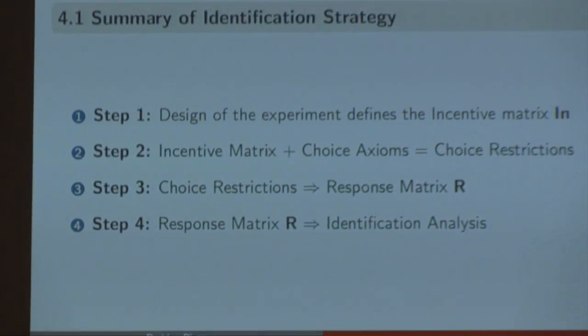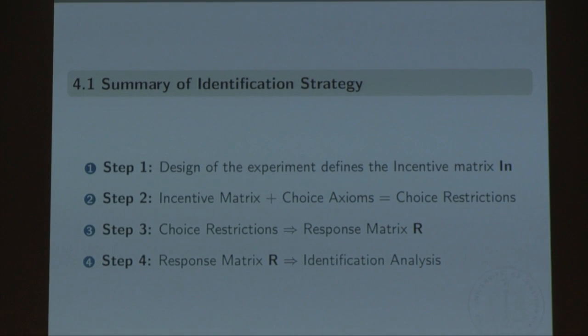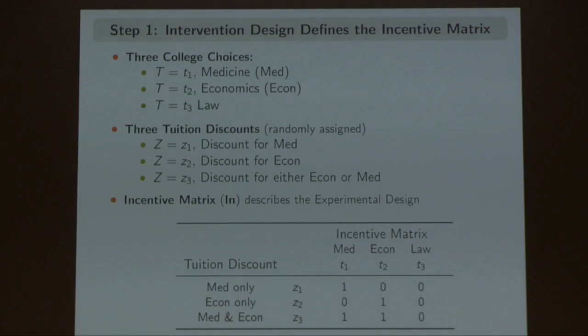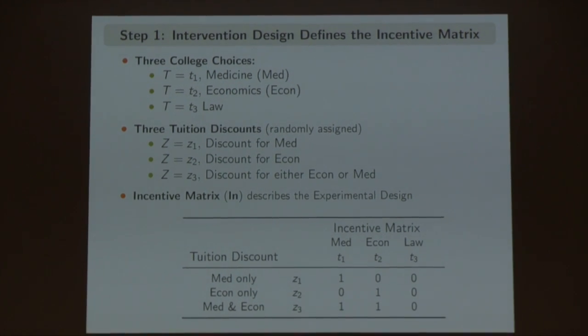The identification strategy: I start with the design of the experiment — that's my incentive matrix. I assume some choice axiom and get choice restrictions. Out of these choice restrictions I get the response matrix. Out of the response matrix I get the identification analysis. Let me show one potential intervention design. In this one, someone can choose college — medicine, economics, or law.